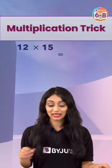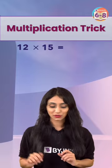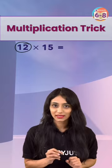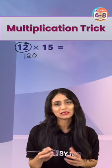Suppose we have 12 times 15. Ek simple se trick ka follow kar sakte ho. Jo bhi apko two digit number diya hoa hai, you multiply it with 10. That means it becomes 120.